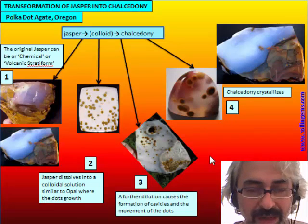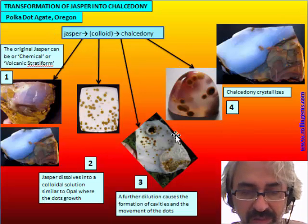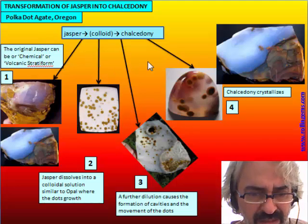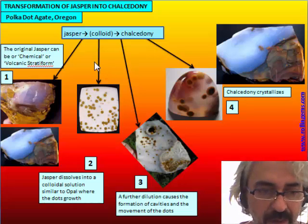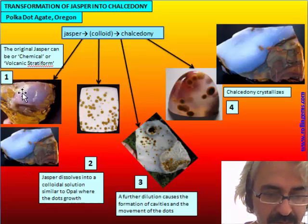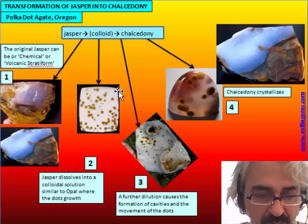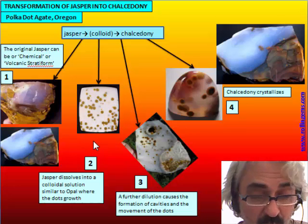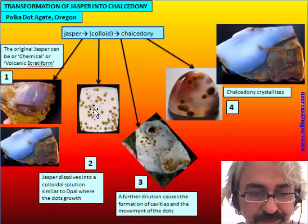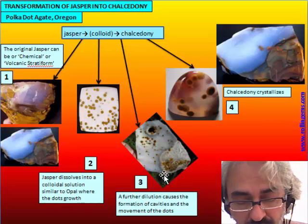Analyzing the history of Polka Dot from Oregon: there is just one location, all in the same area. The original Jasper can be volcanic or chemical and is formed as a Jasper with its structure. In a second phase there is secondary dissolution and it is transformed into a colloidal solution very similar to Opal, with more water compared to Jasper; in this colloid the dots grow. Then there is further dilution causing the formation of cavities and movement of the dots, and also the formation of quartz, so the dilution is quite strong.